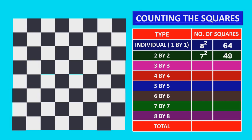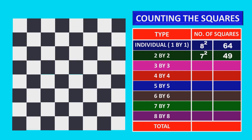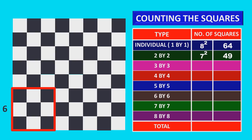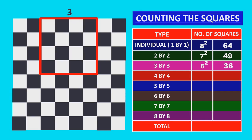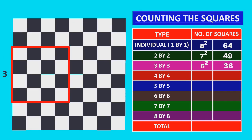Similarly, we can do this process for all the squares. Now, consider 3 by 3 squares: 6 columns and 6 rows. So, 6 into 6, which is 6 squared, equals 36 squares. Now, 4 by 4: 5 columns and 5 rows. So, 5 squared is equal to 25 squares.